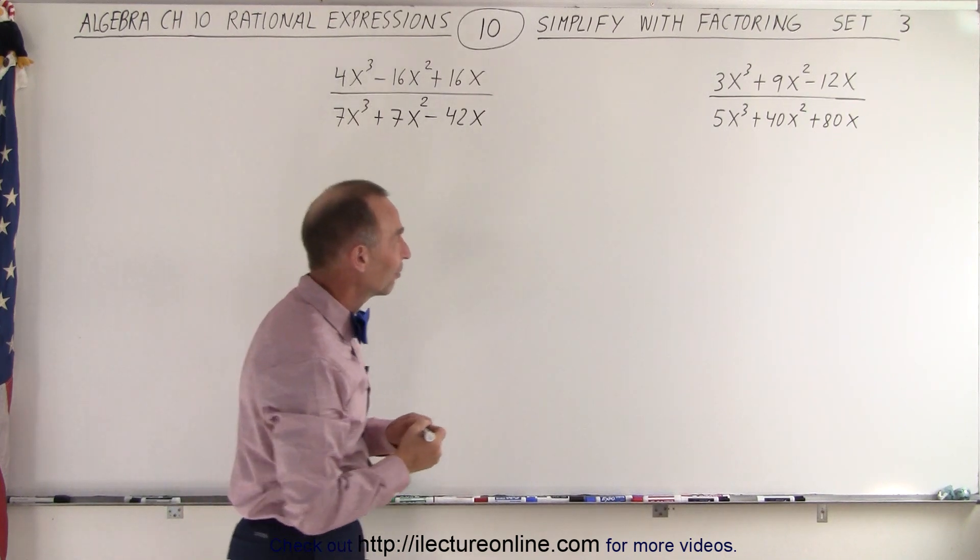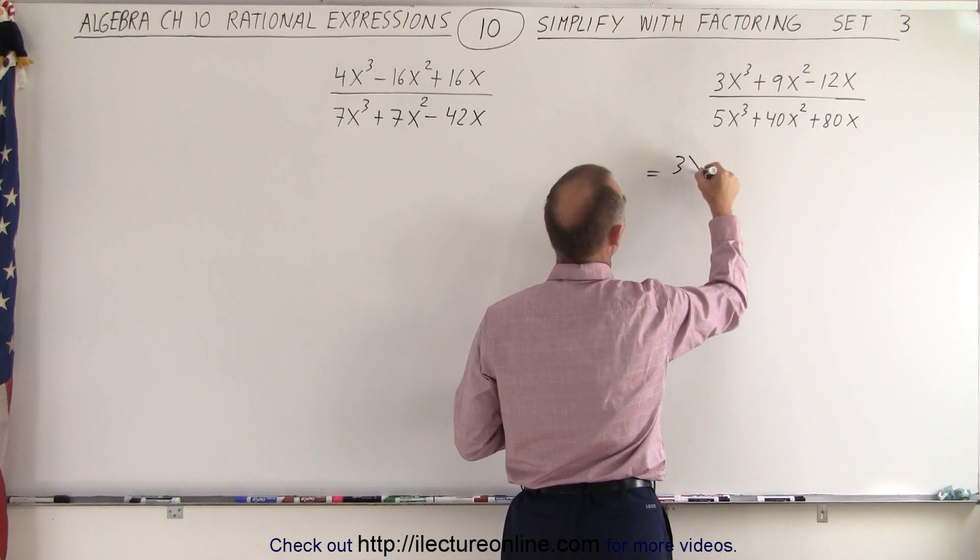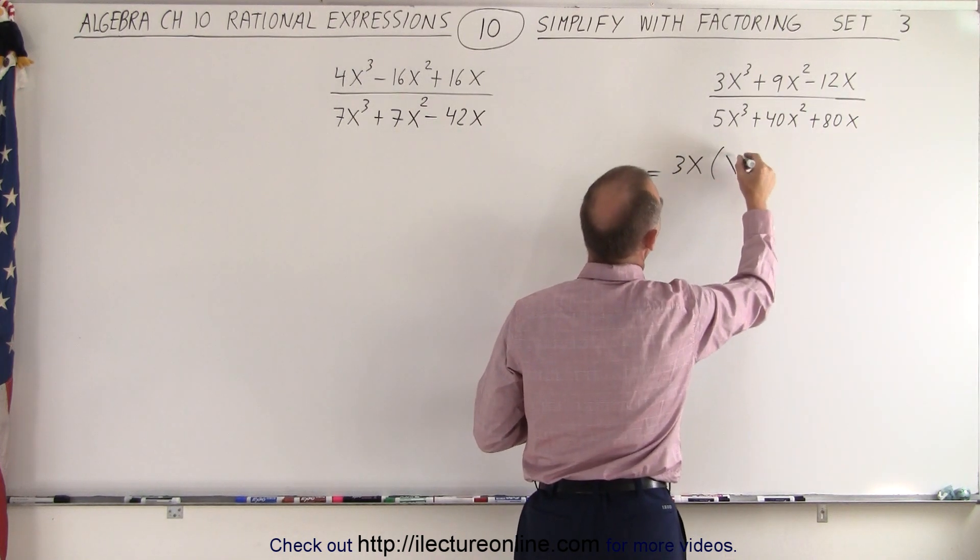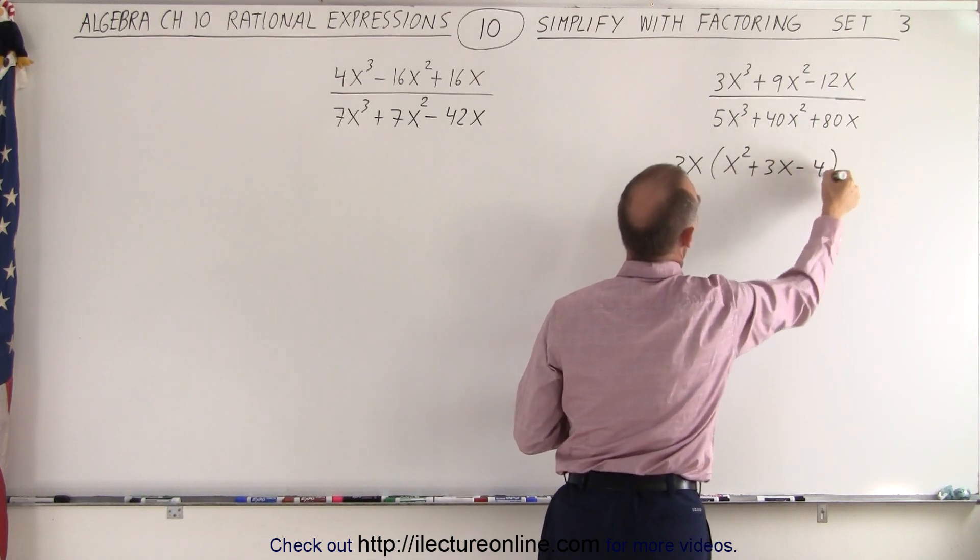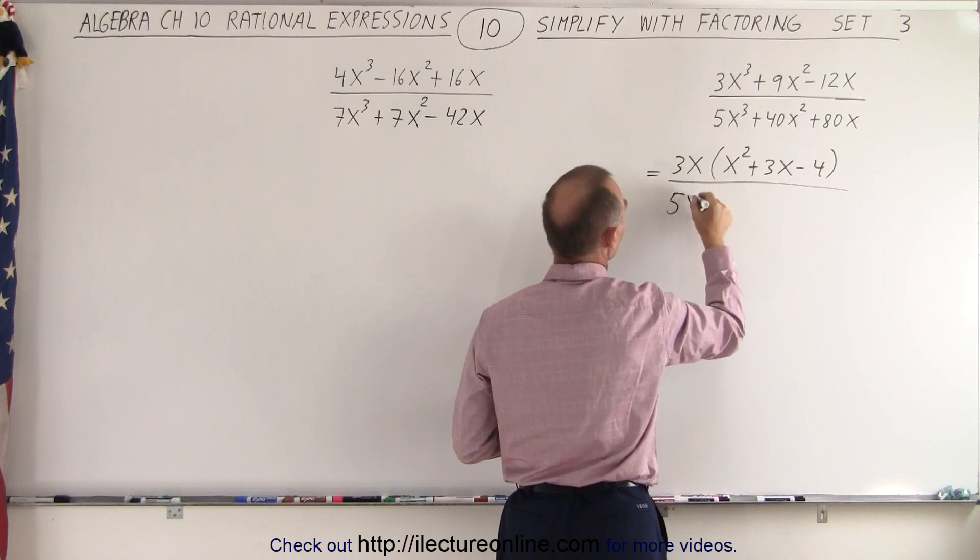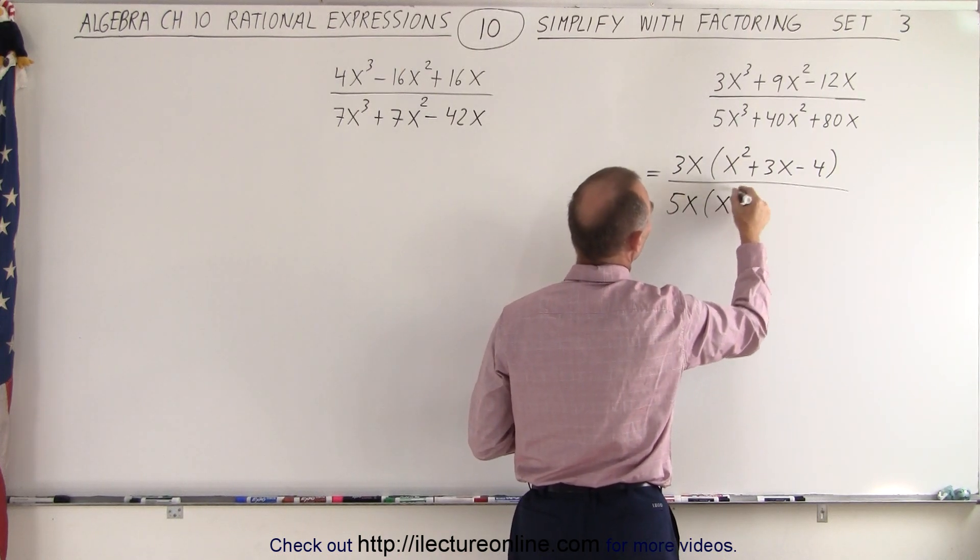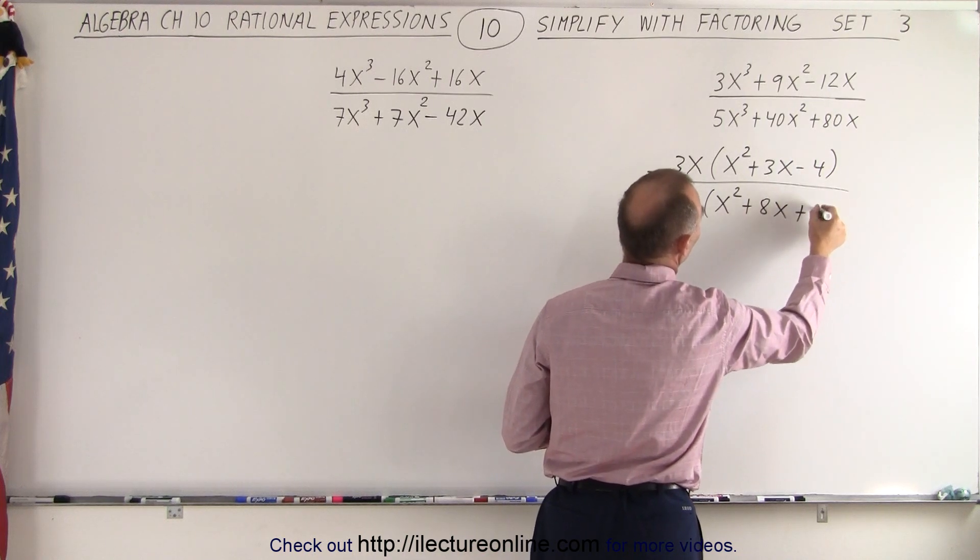Let's try that and see what we have left. So this can be written as, let's factor out a 3x, which leaves us with x squared plus 3x minus 4 for the numerator, and in the denominator when we factor out a 5x, we're left with x squared plus 8x plus 16.